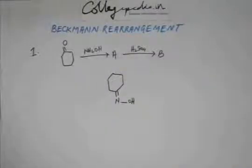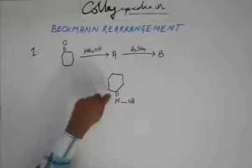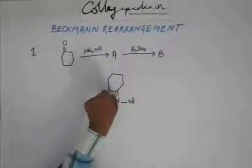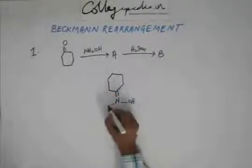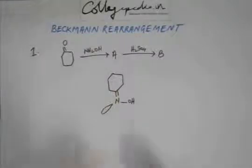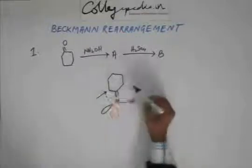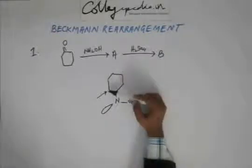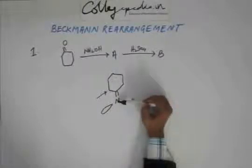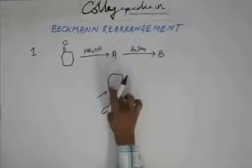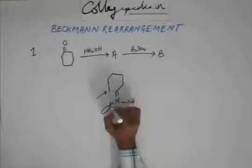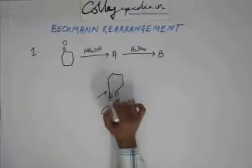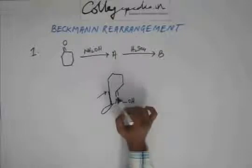Now you do Beckmann's rearrangement because you are adding H2SO4 on an oxime. This time, this bond on this side and a bond on this side — this bond will migrate onto nitrogen because it is parallel to the orbital. If this migrates, the bonding of this carbon will break with this carbon, and this carbon will attach to this nitrogen. The ring, which is a 6-member ring, is going to become a 7-member ring: 1, 2, 3, 4, 5, 6 and then to nitrogen — 7. So this nitrogen is added into the ring.